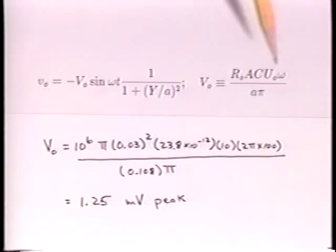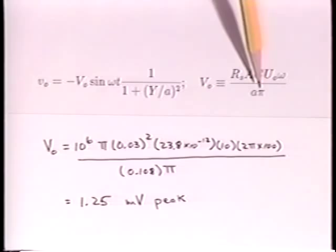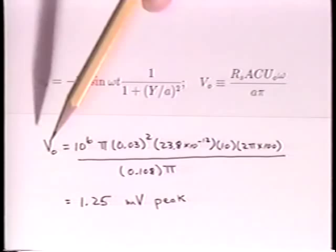A, the distance from the image charge to the ground plane, is calculated as 10.8 centimeters. Then V0, the voltage with the probe directly centered under the cylinder, is calculated as 1.25 millivolts peak.